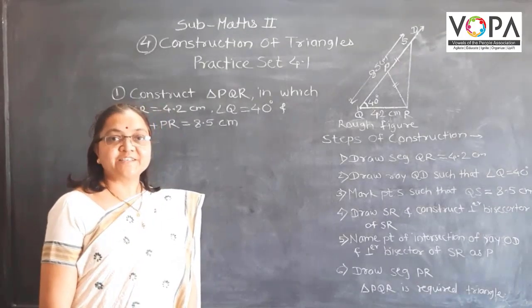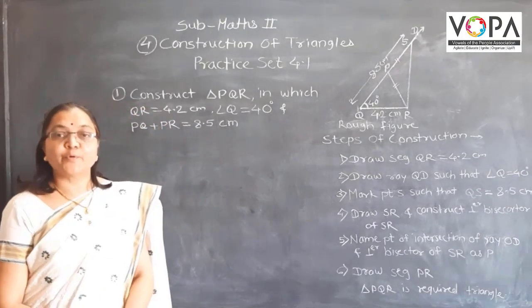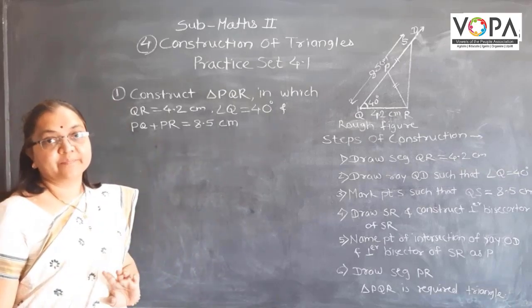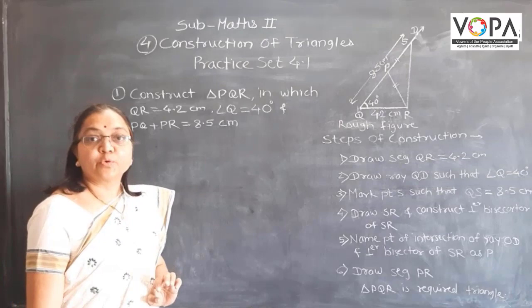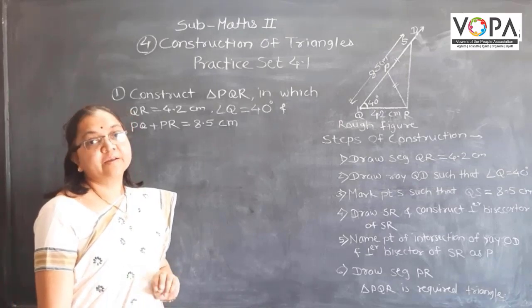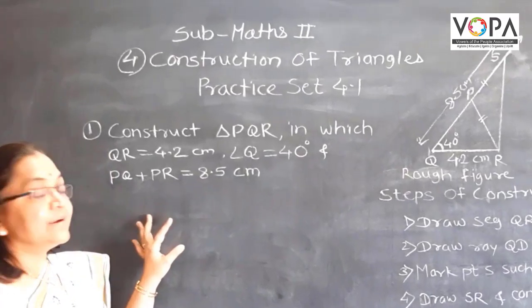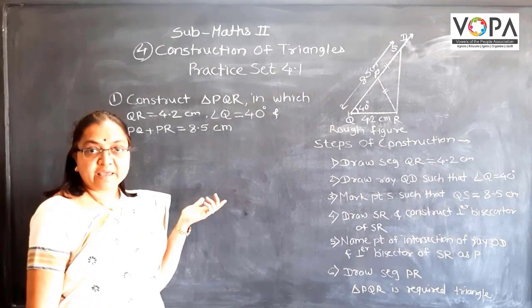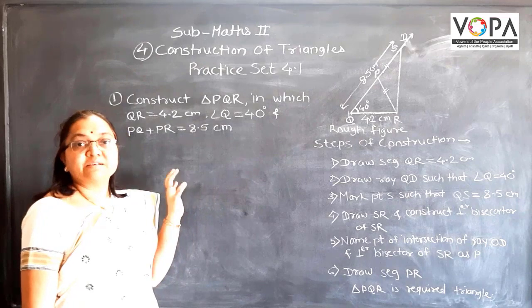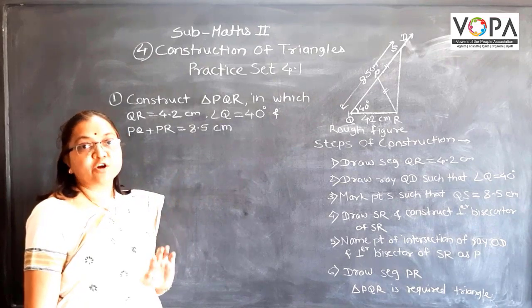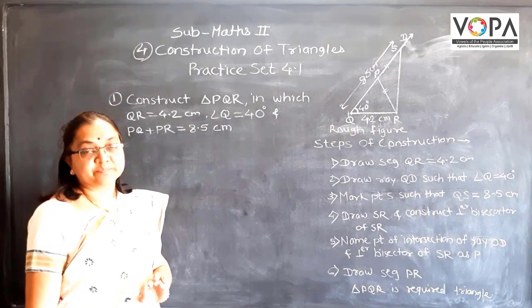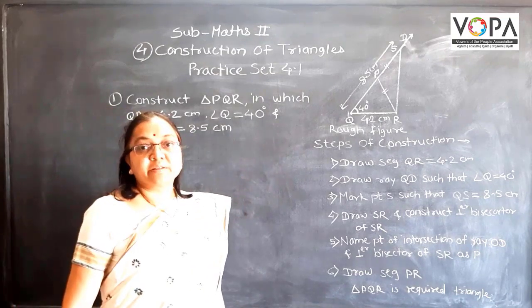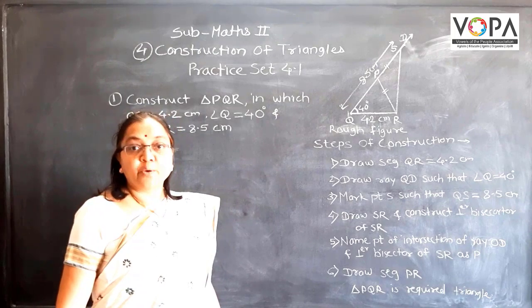Welcome students, let's start from this set 4.1, example number 1. In this example, we have to construct triangle PQR. The base of that triangle is given, one base angle, as well as the sum of the two sides of that triangle is given. If we draw a perpendicular, then we can draw the given triangle accurately.